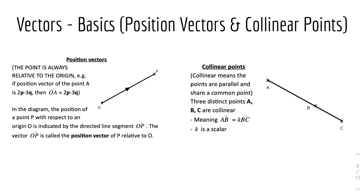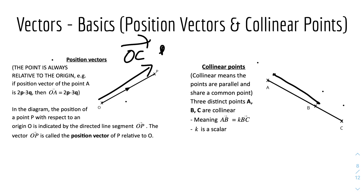Here we have position vectors and collinear points, where collinear basically means on the same line. For a position vector, the point is always relative to the origin — it'll always be OC, OD, OE, or whatever, because O means the origin. So for example, if the position vector of point A equals 2p minus 3q, then OA equals 2p minus 3q. Collinear means the points are on the same line and share a common point. For three distinct collinear points A, B, and C, AB equals a scalar multiple of BC — for example, if AB is two units and BC is one unit, then the scalar factor is 1/2.